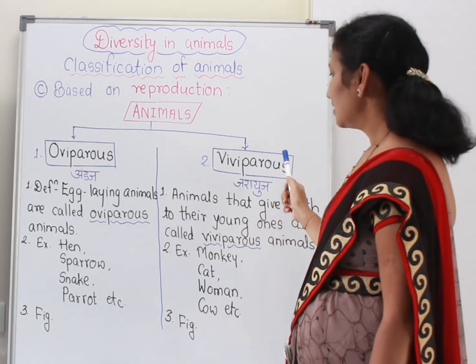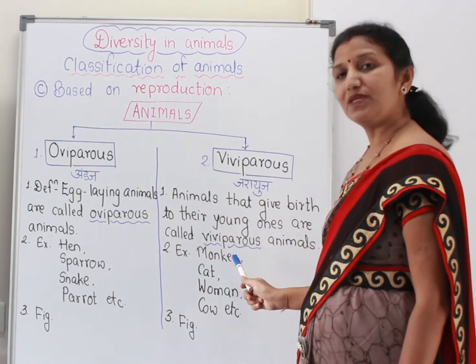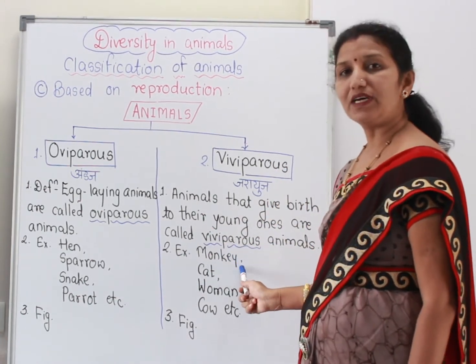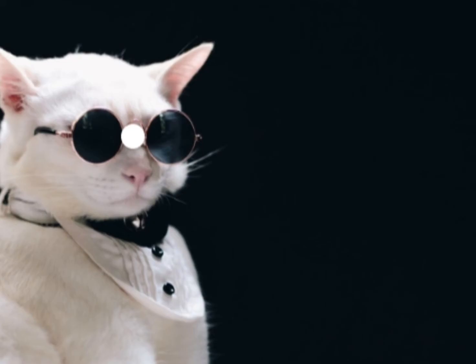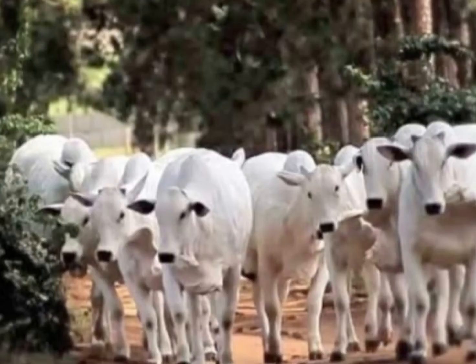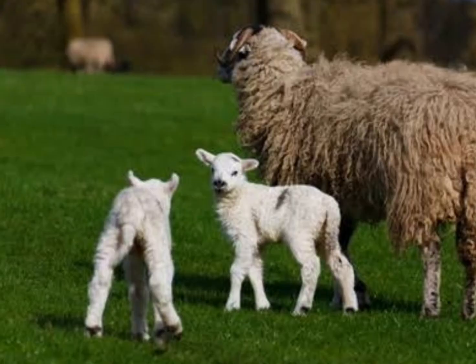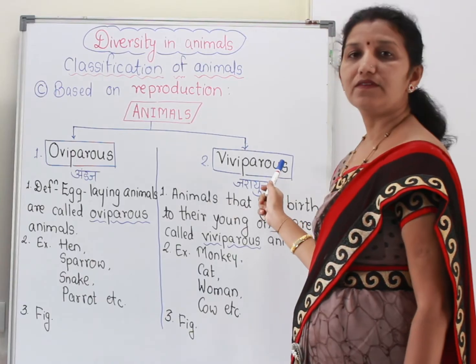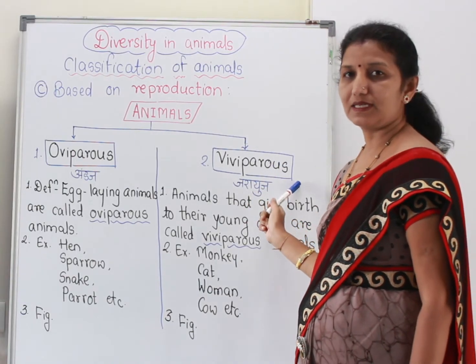And viviparous animals — examples are monkeys, cat, woman, cow, and buffaloes. These are the examples of viviparous animals.